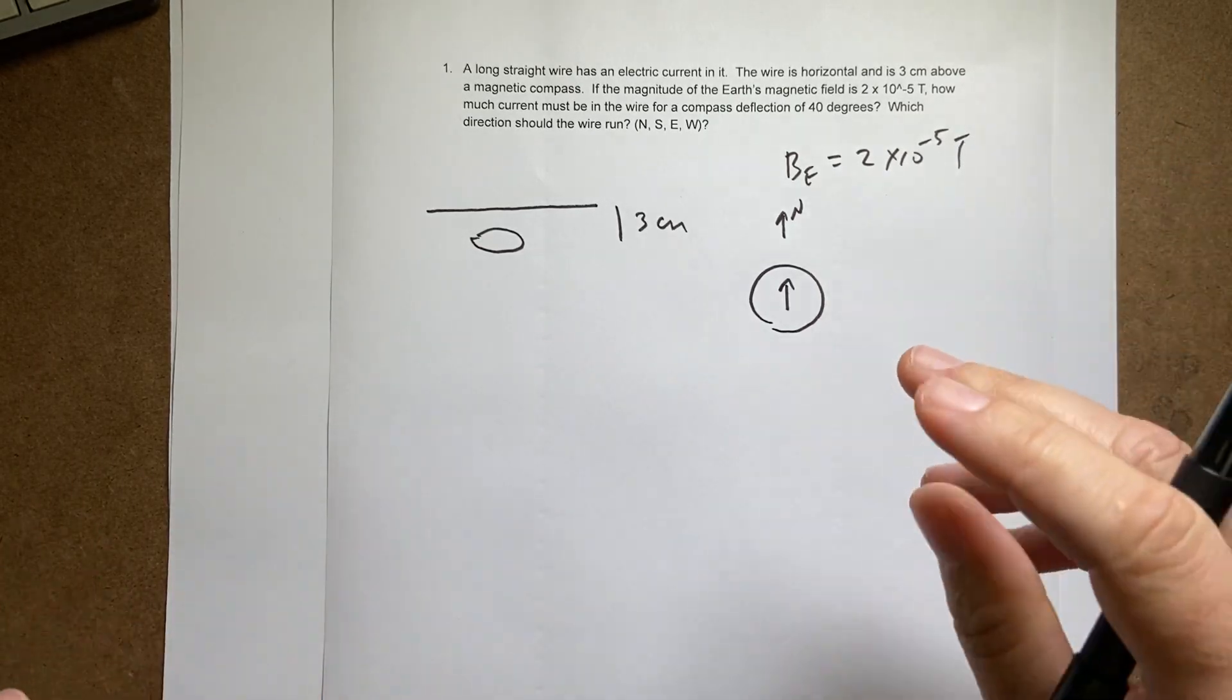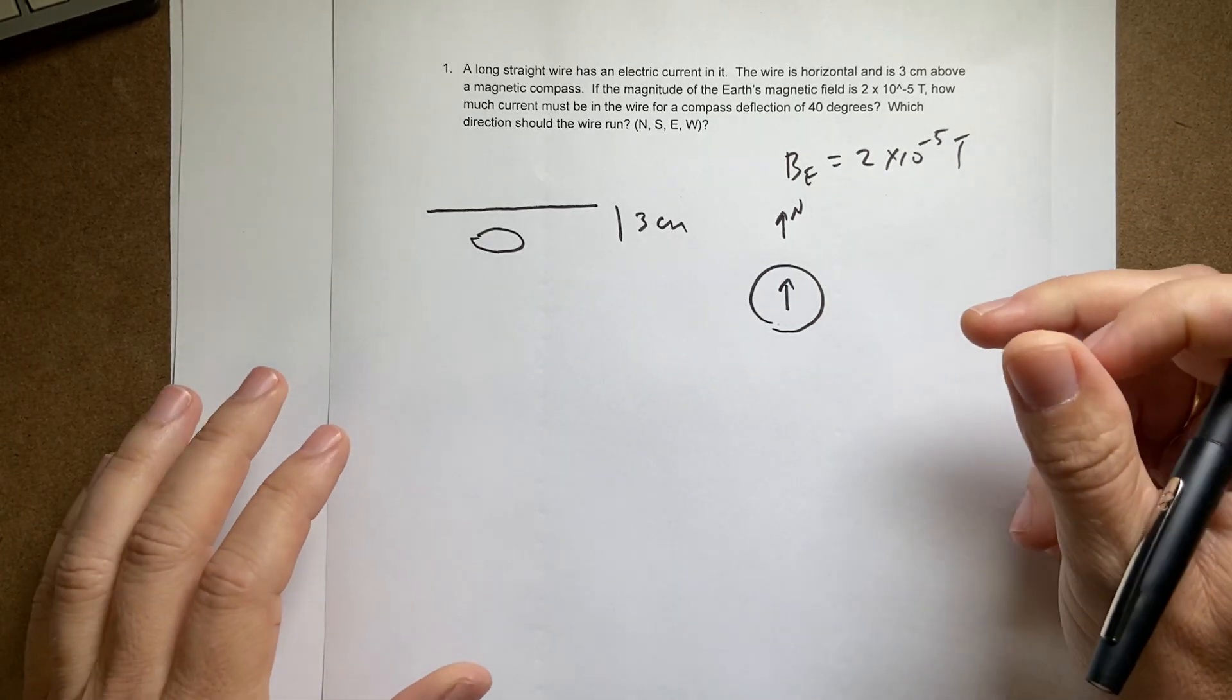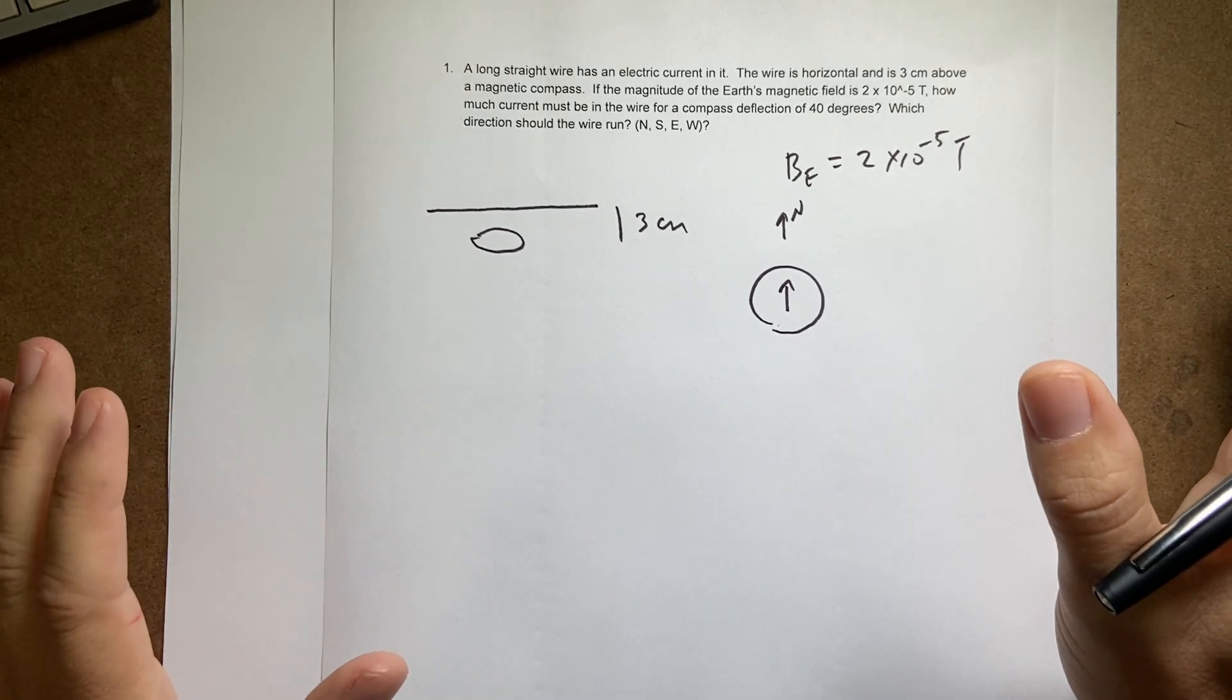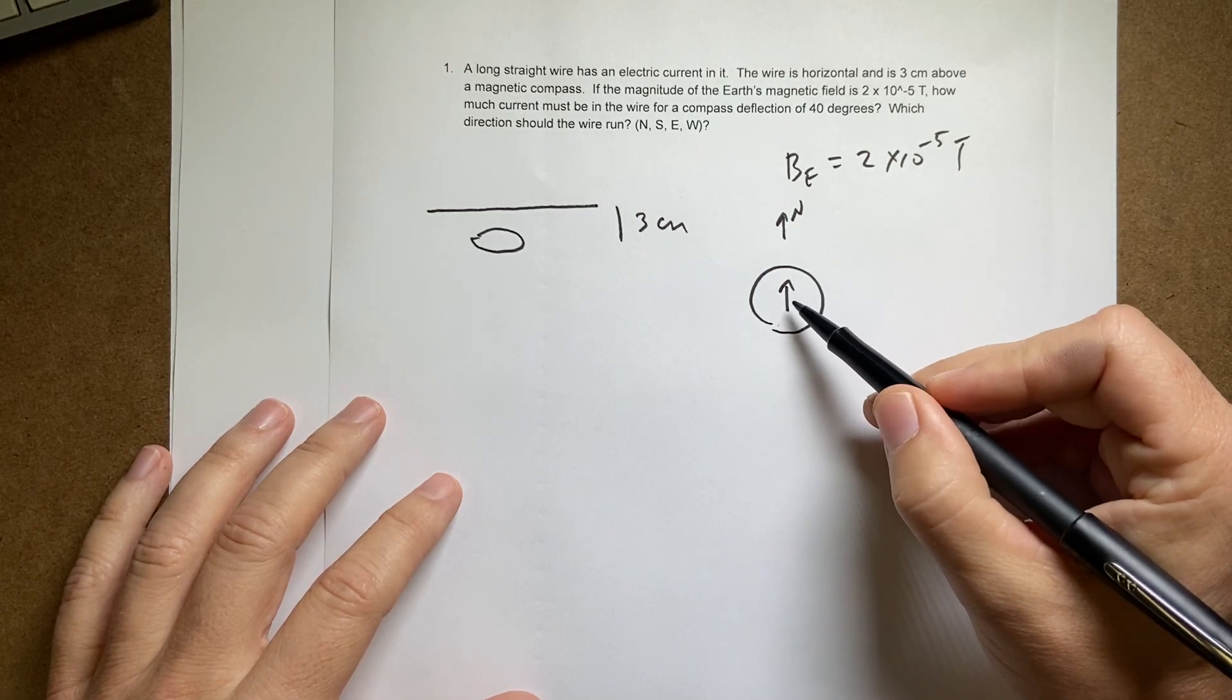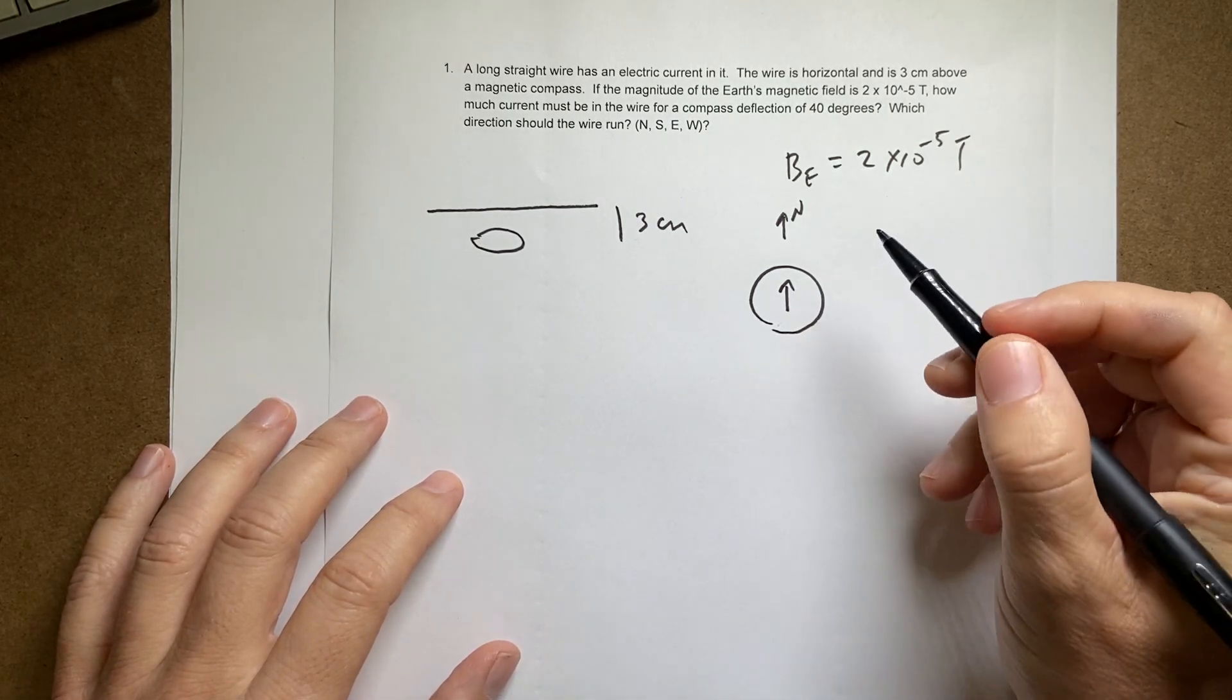But compasses are weighted such that they work with the, they kind of balance out that vertical component. So that the net result is the needle points in the direction of the magnetic field.